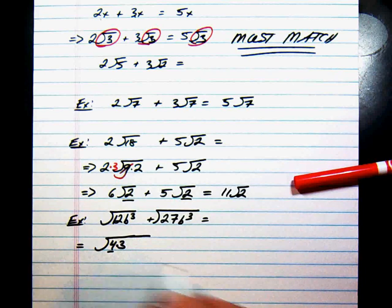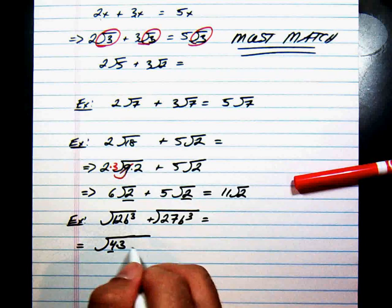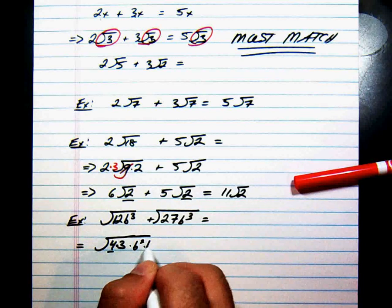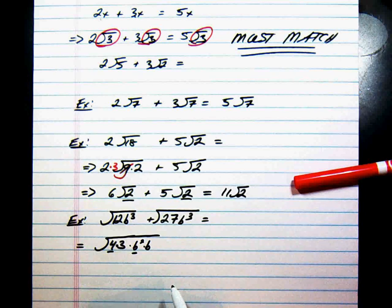B cubed is b squared times b to the first. There's your perfect square factor there.